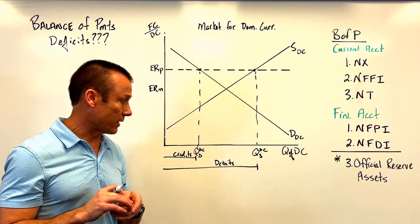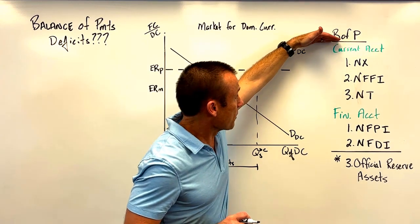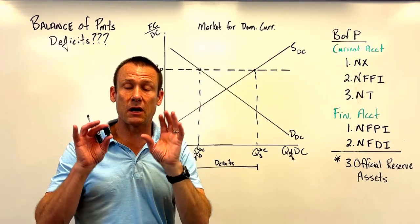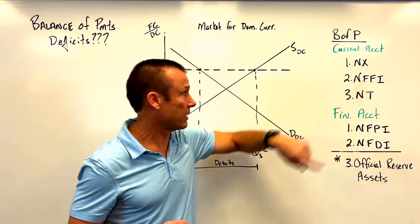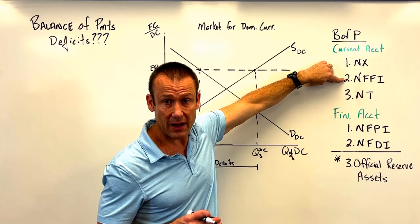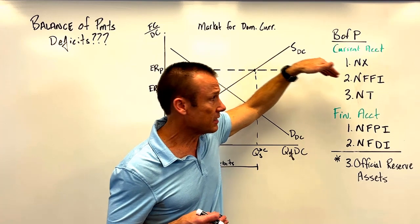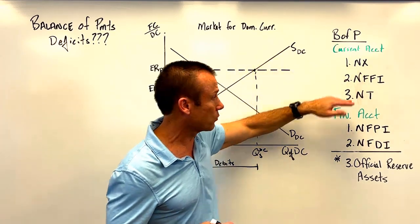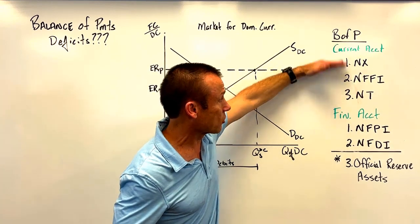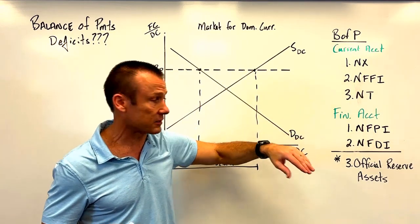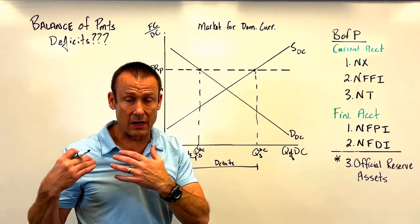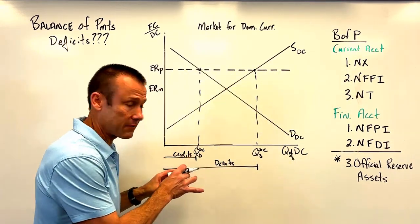So we have a balance of payments deficit. What we're really saying is: from the quantity demanded to the quantity supplied, there's a gap — that portion of the balance of payments is running a deficit. Let me quickly go through the balance of payments. We have a current account and a financial account. In the current account we've got net exports — sales and purchases of goods and services internationally — net foreign factor income, mainly interest and dividend payments, and net transfers like remittances or foreign aid grants. In the financial account: net foreign portfolio investment, basically the buying of stocks and bonds, and net foreign direct investment — multinational corporations operating abroad or coming into the domestic country.